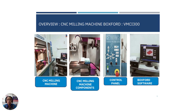This is the CNC milling 3-axis model, the Box Fort BMC1300, which we used to develop the AR. It consists of some components: spindle, table, turret, panel board, and uses Box Fort software.